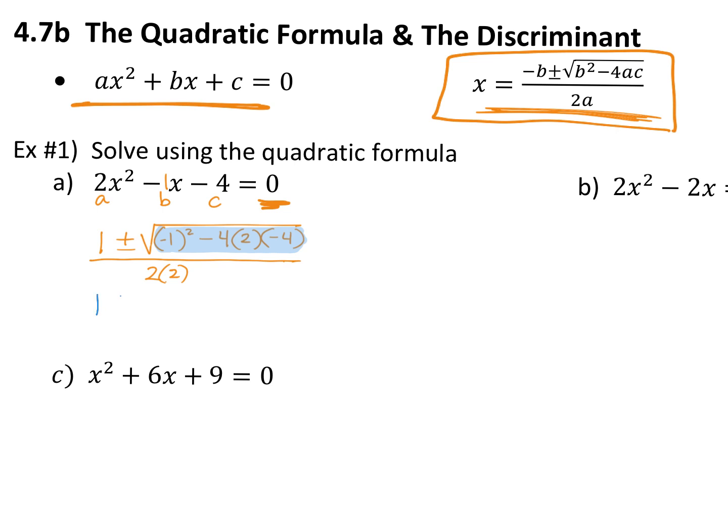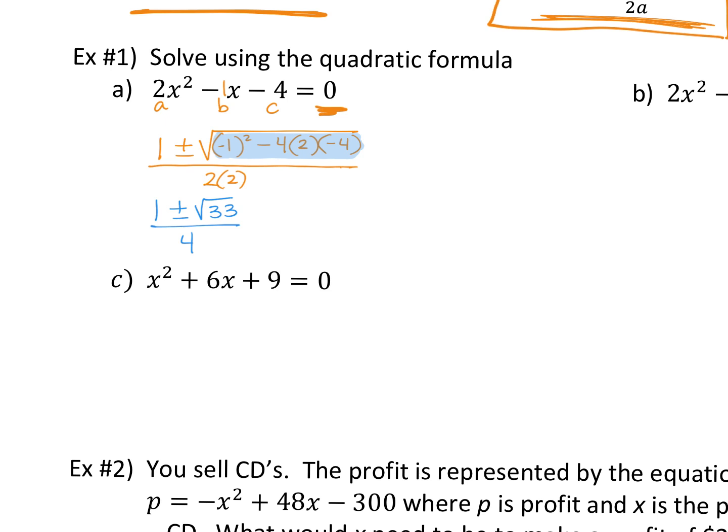So this is one plus or minus the square root of 33 over four. See how easy that is when you just plug it into your calculator the right way. We want simplest radical form, which is why we leave the square root of 33 in there. You could plug in one plus the square root of 33, hit enter, then divide by four — and then one minus the square root of 33, enter, divided by four — and get your two decimal answers. But this right here, X equals one plus or minus the square root of 33 over four, is the answer in simplest radical form. Leave it in simplest radical form unless it's a real-world problem or they tell you to round.